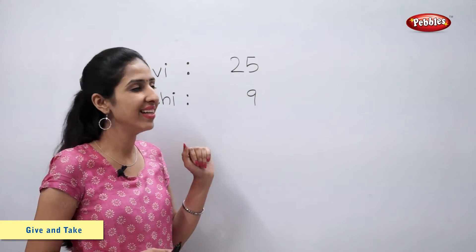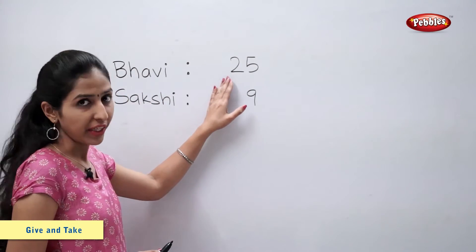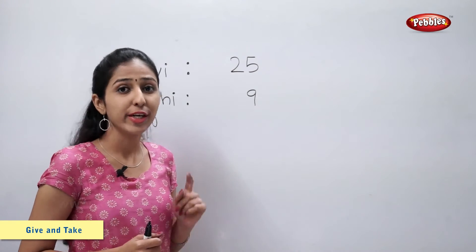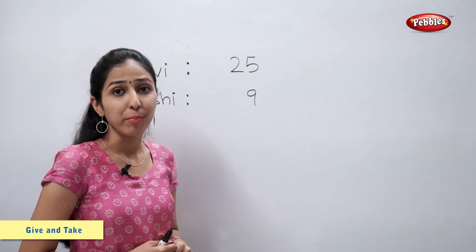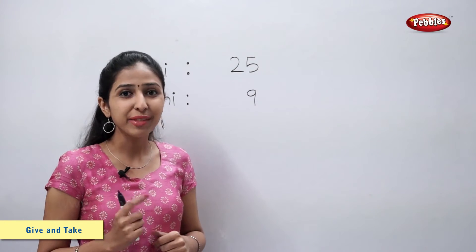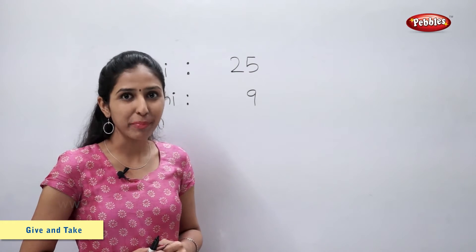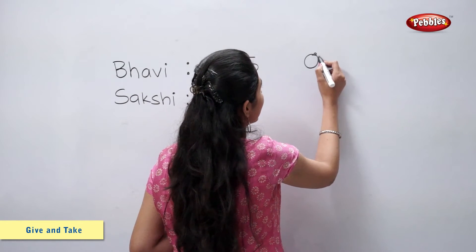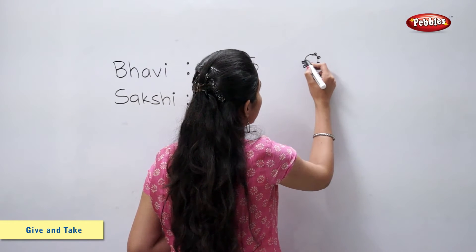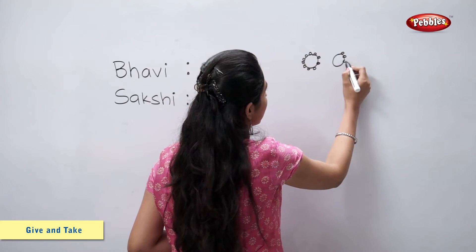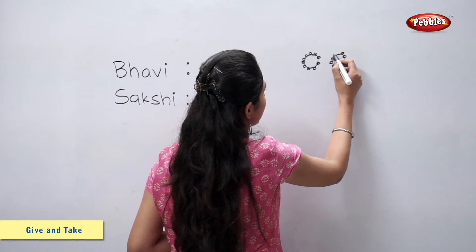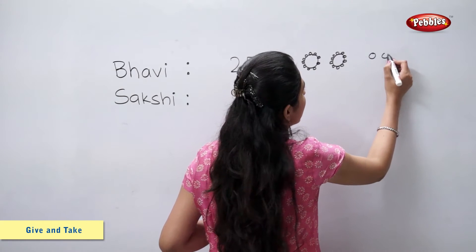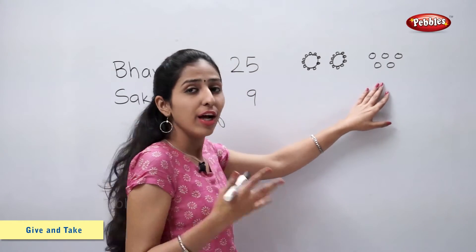Let's solve this example. Bavi had 25 pearls. She gave 9 pearls to Sakshi. Now let's find the number of pearls left with Bavi. Bavi had 25 pearls, that means she had 2 bangles of 10 pearls and 5 loose pearls.